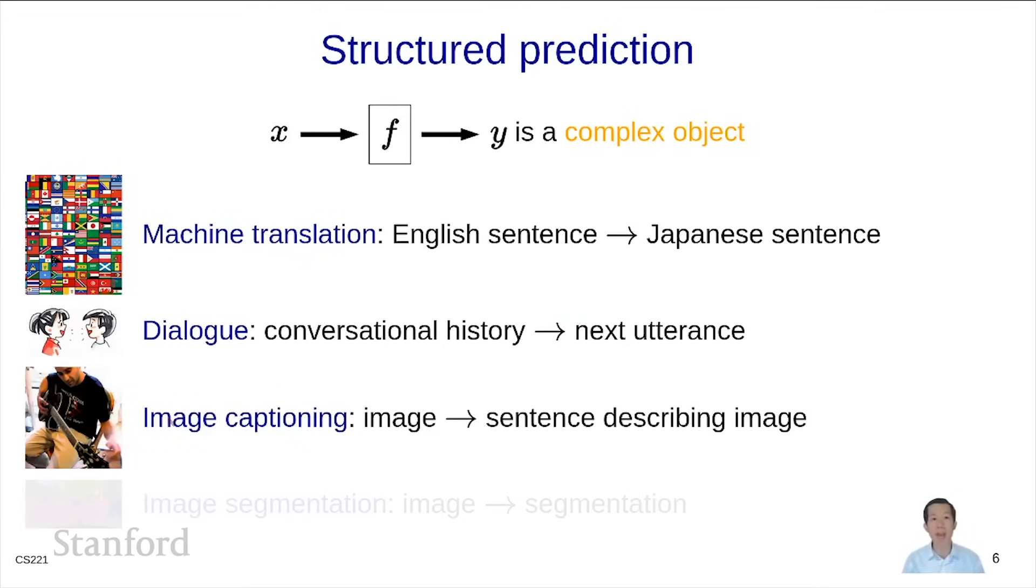Another example is image captioning, which might be useful for visual assistive technologies. X is an image of a scene, and y is a sentence describing or narrating that scene.